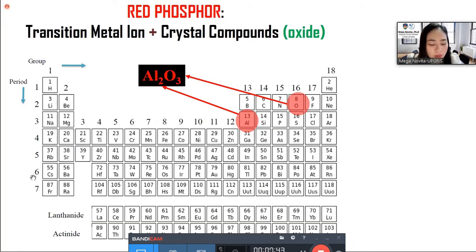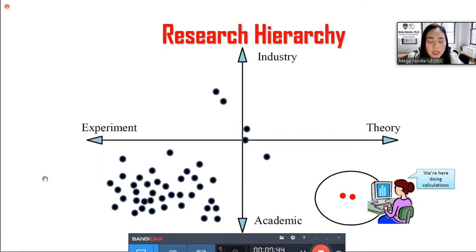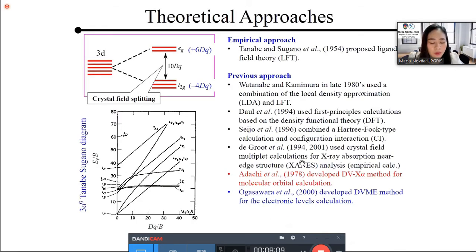This figure illustrates the research hierarchy of experiment industry and theoretical also academic. Many people are doing experiments. Few people have their research, which can be applied in industrial scale, and less people are doing theoretical work. So, this is our chance to get our work stand out.